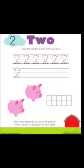Look here, how many pigs are there? 1, 2 — 2 pigs. So what is the spelling of 2? T-W-O, 2.